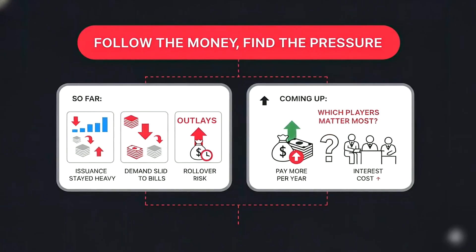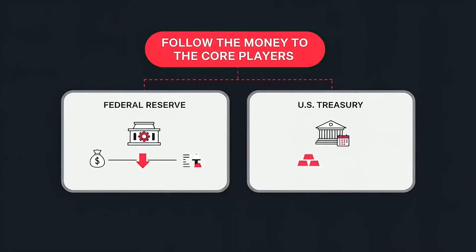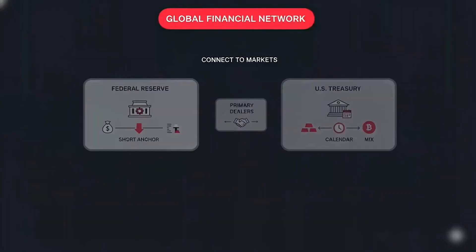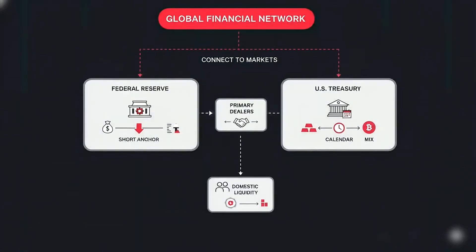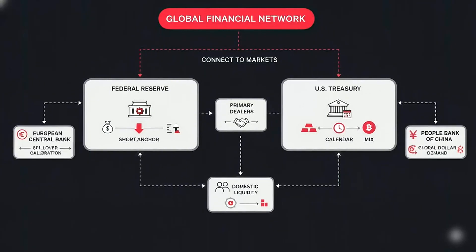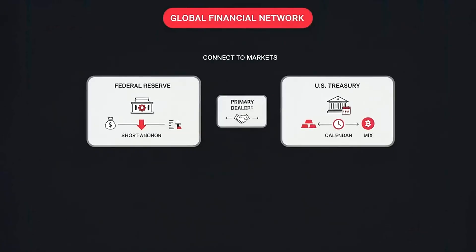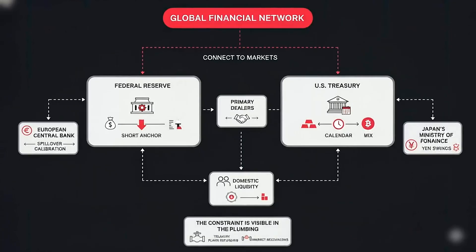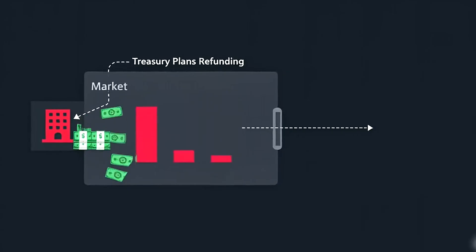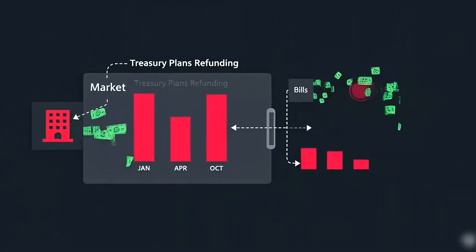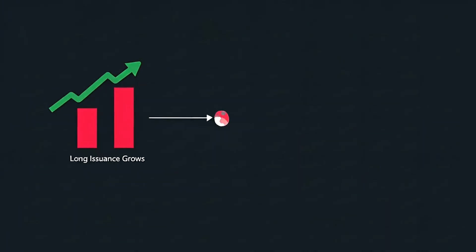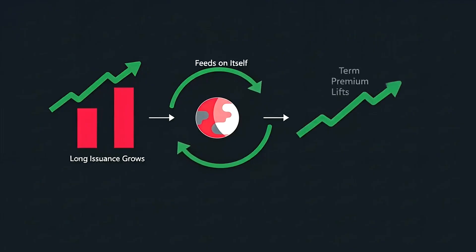Coming up: which players matter most when stress rises? Follow the money to the core players. The Federal Reserve sets the short anchor. The US Treasury sets the calendar and the mix. Primary dealers connect both to markets. The ECB calibrates spillovers. The People's Bank of China controls domestic liquidity and affects global dollar demand. Japan's Ministry of Finance intervenes when yen swings too wide. These desks don't tweet — they move size. Treasury plans refunding four times a year. When tails widen, the desk adjusts sizes by tenor. When bills swell too large, rollover risk grows. When long issuance grows, term premium can lift further before it falls. That loop can feed on itself.